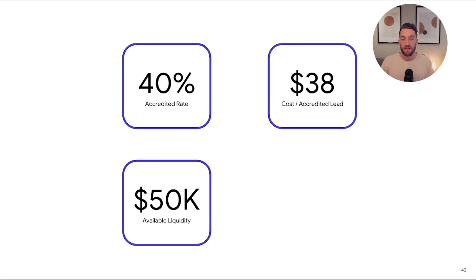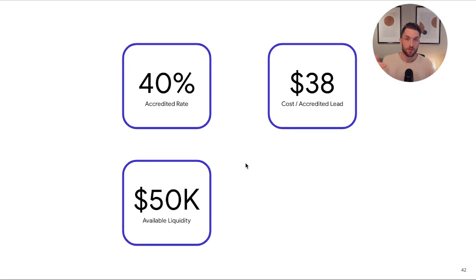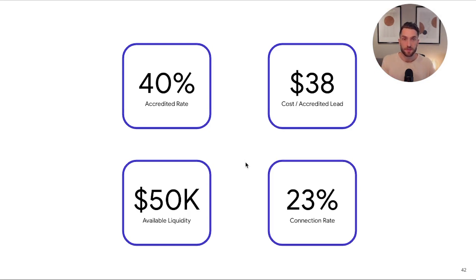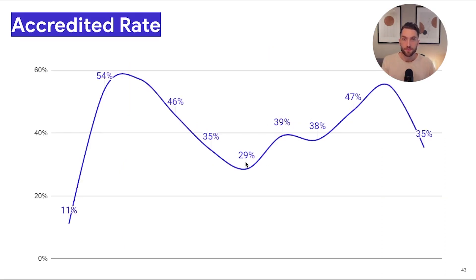The second key number was $40 per accredited lead, which worked out quite well for us. Then there was available liquidity — we asked in the form how much they're looking to invest across different brackets. The key bracket we saw from our experience was $0 to $50,000. And from the people we actually tried to call, we connected with about 23%, which is lower than we expected but aligned with industry benchmarks.